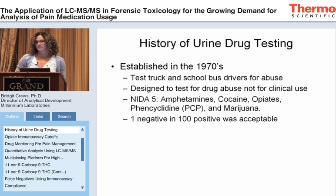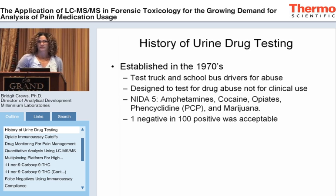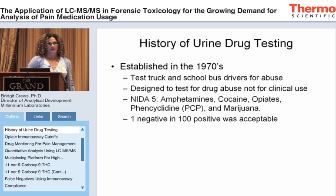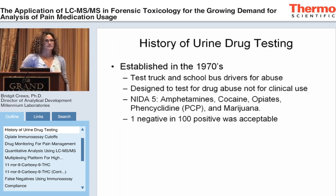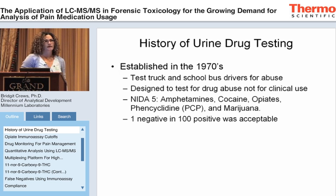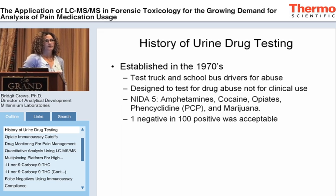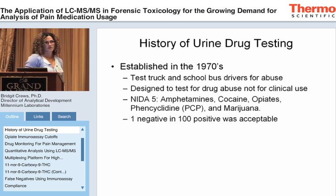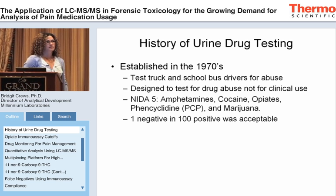Gas chromatography is somewhat labor-intensive. It requires derivatization, sample extraction, and a skilled laboratory scientist. So the model was set up to screen by immunoassay and then only confirm those samples which came back positive with GC-MS.